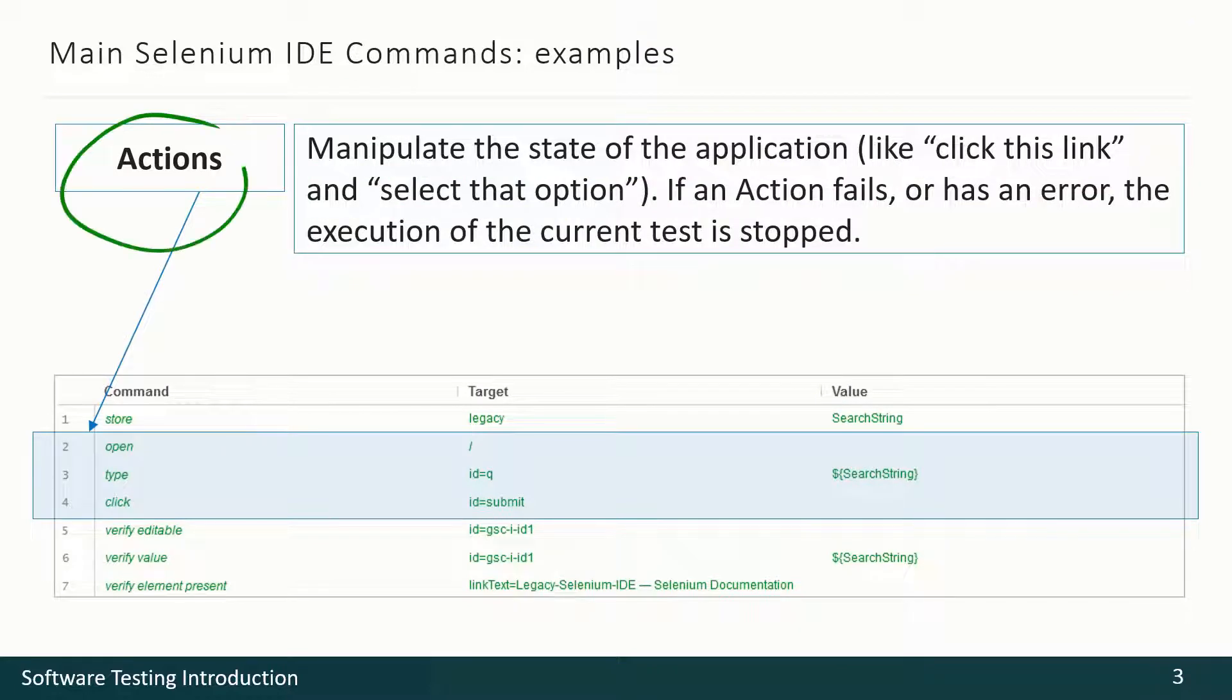So, some more details here. Actions like open, click, type, manipulate the state of the application. Here we are opening some URL. We are typing somewhere something. We are clicking something. And once again, remember that if an action fails, the whole test fails and stops.